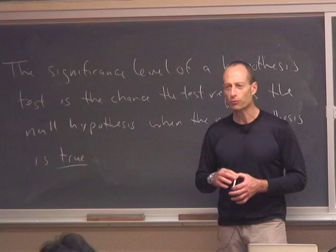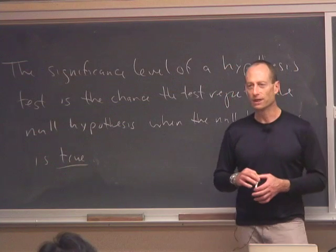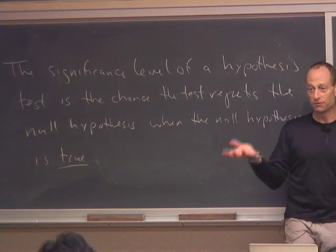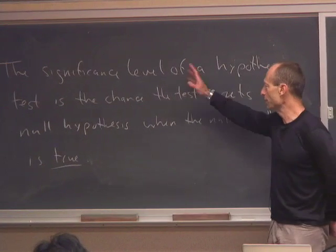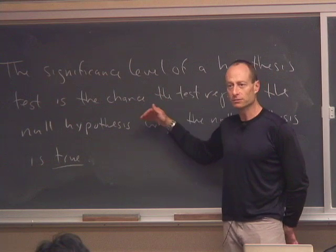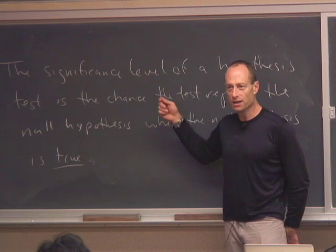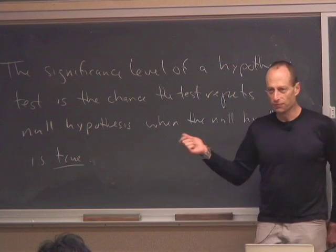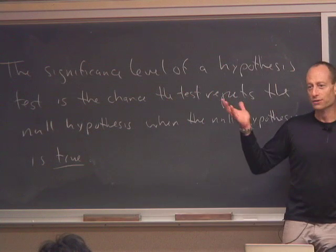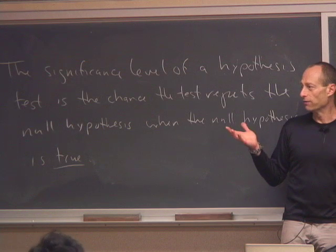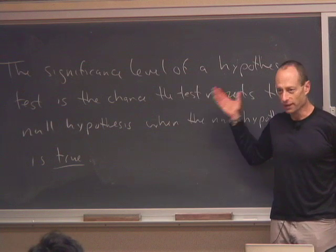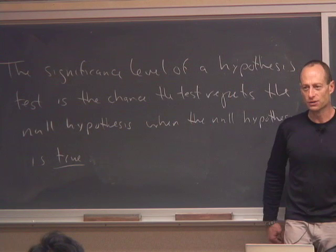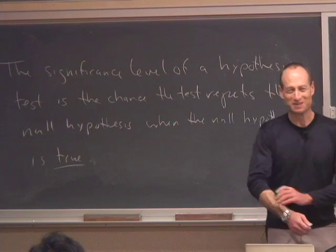This is in the context of a homework problem — the rolling a die problem. The null hypothesis is that the die is fair. When computing the significance level, you assume the die is fair and ask what's the chance you would see the thing that would cause you to reject the null hypothesis. So if your test says reject if you see more than five ones in a certain number of rolls, you find the chance of seeing more than five ones in that many rolls of a fair die — because that's the chance you would reject if the null hypothesis is true.